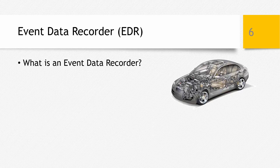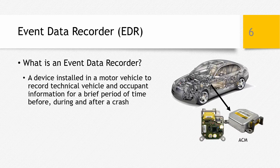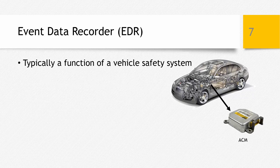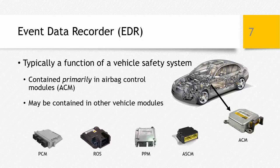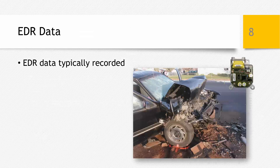What is an event data recorder or EDR? EDRs are installed in a vehicle and record specific technical, vehicle, and occupant information for a very brief period of time before, during, and after a crash. Understand that EDRs are not continuously recording data — a crash or other significant event must occur for data to be recorded. EDRs are typically a function of a vehicle safety system and are primarily contained in the airbag control module. The airbag control module's primary function is to tell the car when to deploy an airbag; the event data recorder is a secondary function of many ACMs.